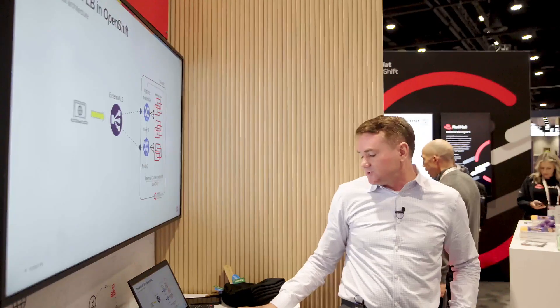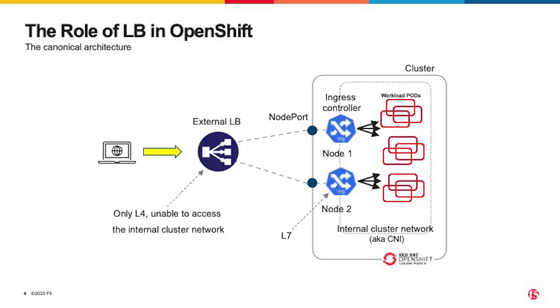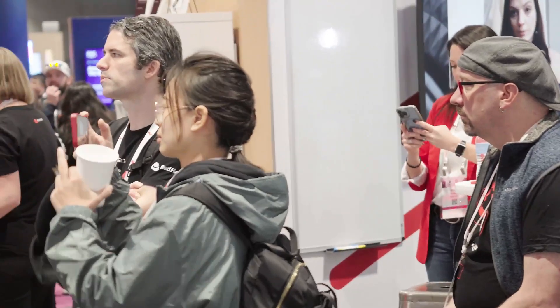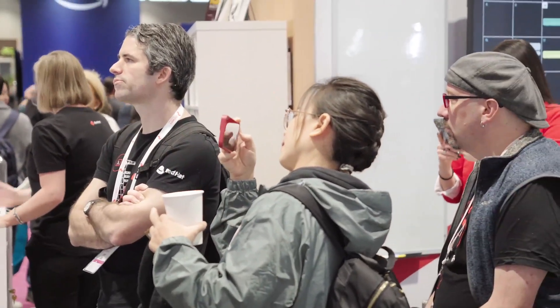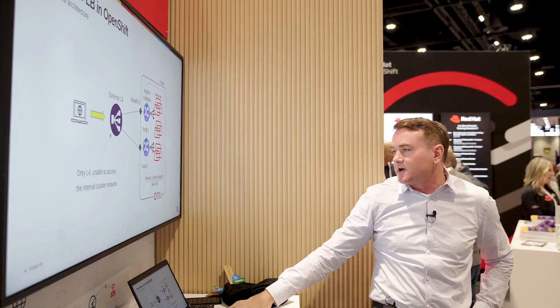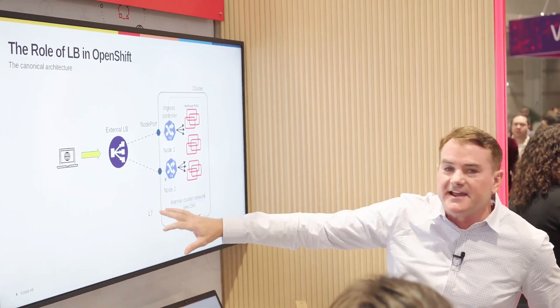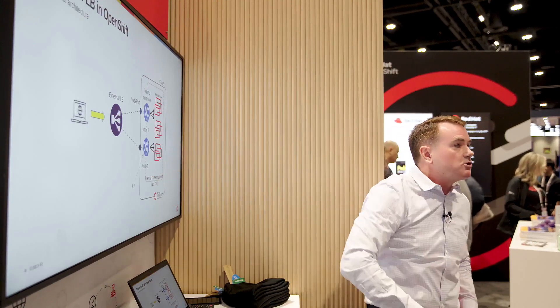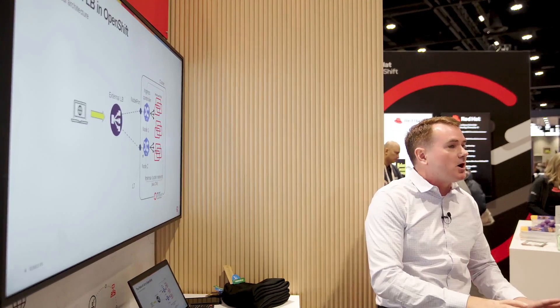With traditional load balancing, F5 sits outside the cluster and directs traffic into it. F5 can send traffic directly to the node using node port, or directly to a pod using an L7 type environment. One key capability is communicating directly with pods using OVN Kubernetes, which gives direct access to pods through simple routing.